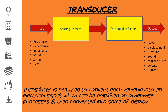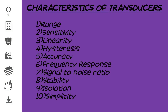This input energy is sensed by a sensing element and then processed by a transduction element. Lastly, the input energy is converted to another form of energy as the output, such as force, displacement, pressure, current, voltage, magnetic flux, or sound. This output can be amplified and processed, and we can view it via a display.